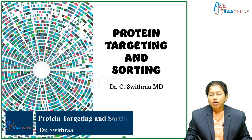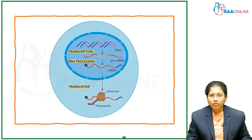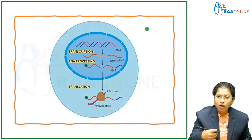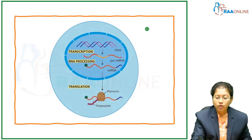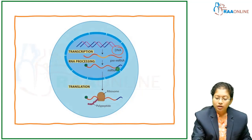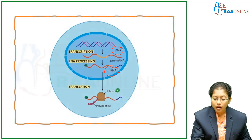Hello Raw Online Learners, this session is about protein targeting and sorting. Seeing this diagram, you know very well this is the central dogma of the nucleus. All our information is stored in the DNA. This information, this code, is passed on as a message through mRNA — messenger RNA. This one is decoded in your ribosome to produce your protein.